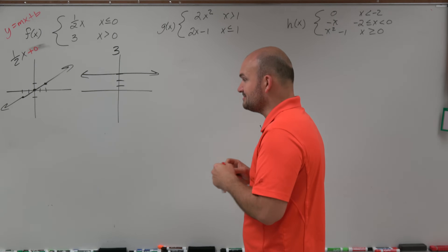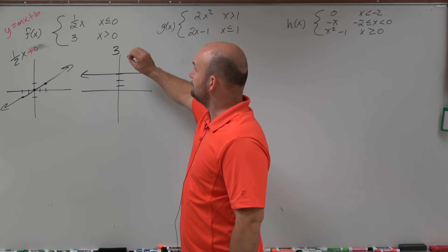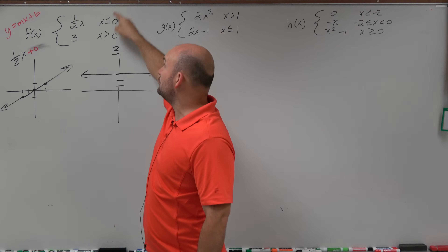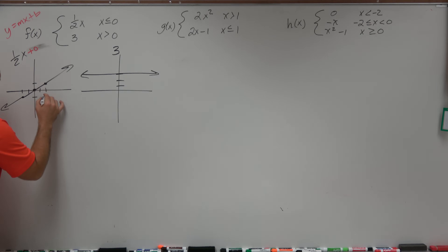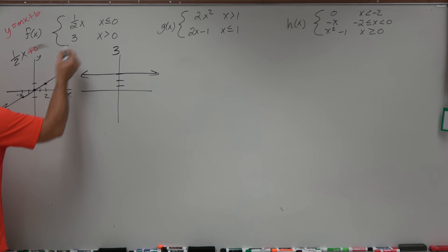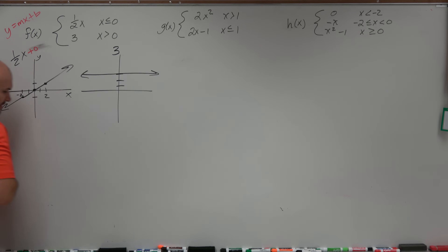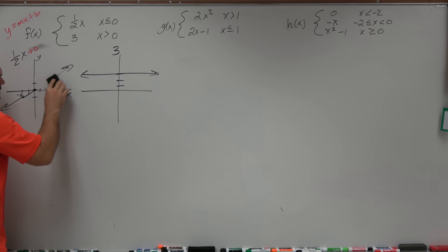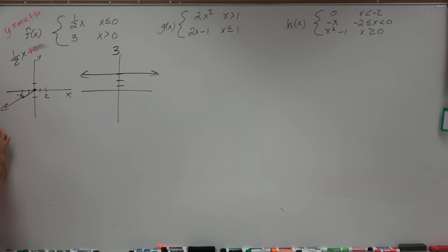Before we bring them together, what's important is to look at these and say: I'm graphing the one half x, but I'm only graphing when x is less than zero. If you think about a number line — here's positive two, here's negative two — here's the x-axis, here's the y-axis. So when x values are less than zero, that's going to be from the y-axis over. We're not going to draw anything where the x values are positive, only when the x values are negative.